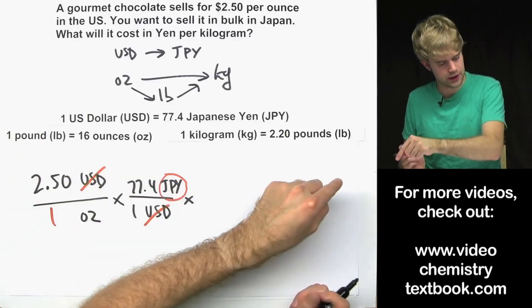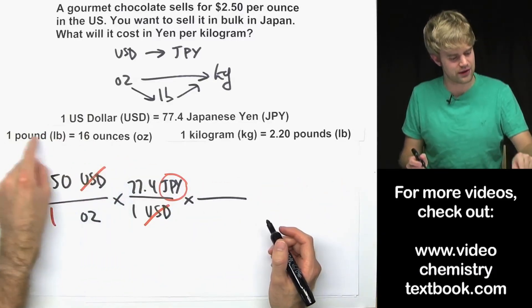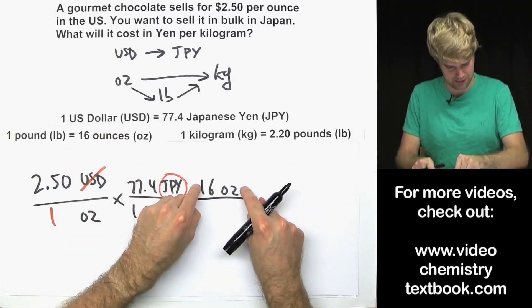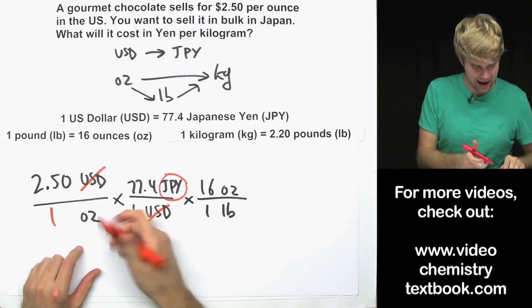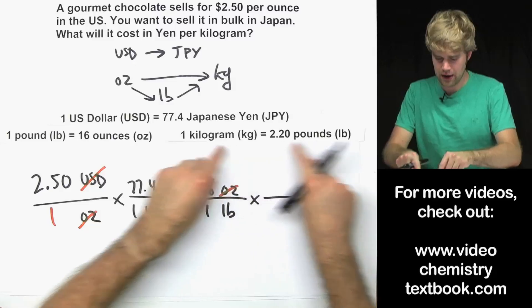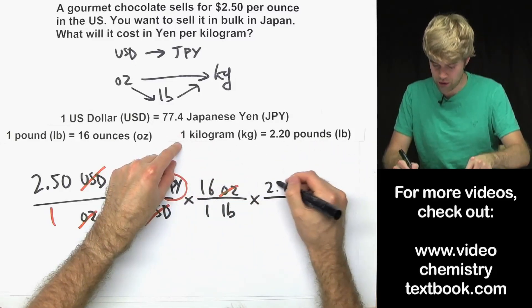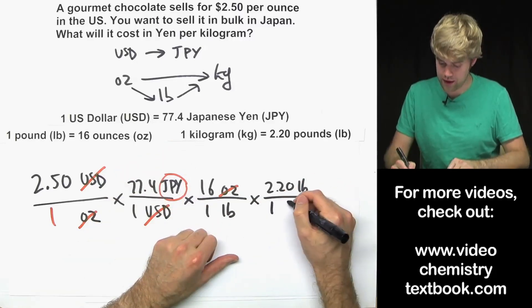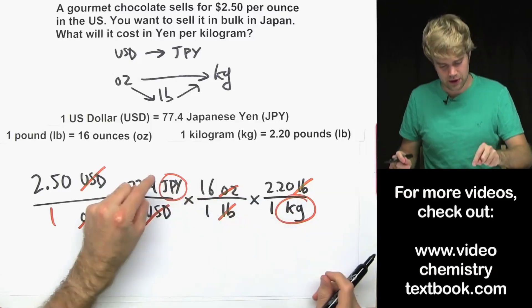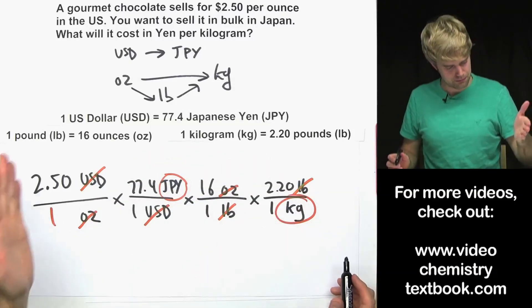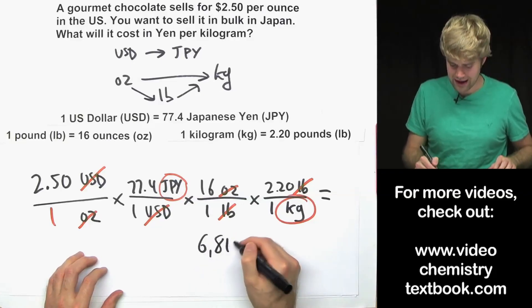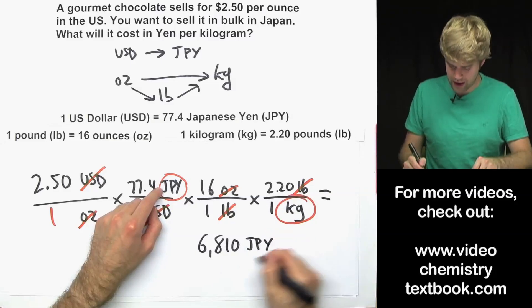Now we have ounces on the bottom and we want kilograms. First, multiply by a factor to get from ounces to pounds: 16 ounces on the top, 1 pound on the bottom — ounces cancel. Then to get from pounds to kilograms: 2.20 pounds on the top so they cancel, and 1 kilogram on the bottom. Now I have Japanese Yen on the top and kilograms on the bottom. Plugging through the math gives 6,810 Japanese Yen per kilogram.